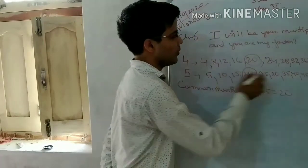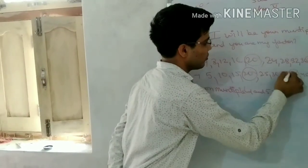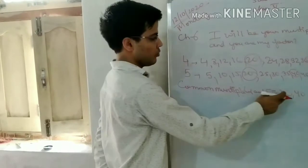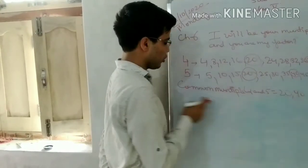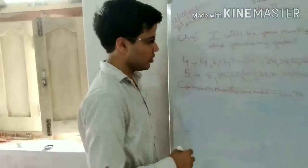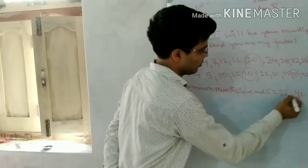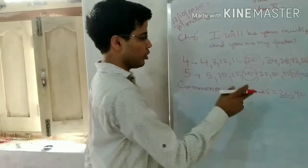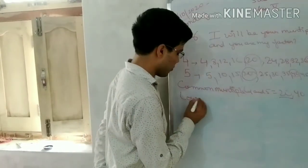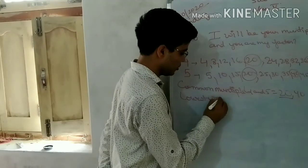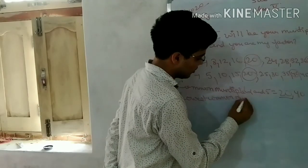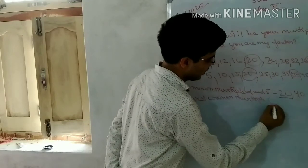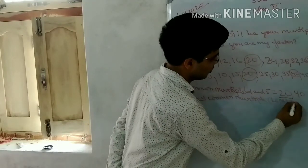Then we got two common multiples: 20 and 40, which are common multiples of 4 and 5. We have to find which one is the smallest. We find that 20 is the smallest among both the common multiples. So the lowest common multiple is equal to 20, or LCM = 20.